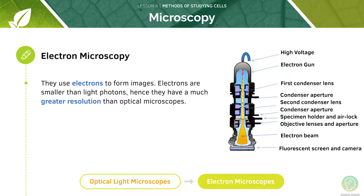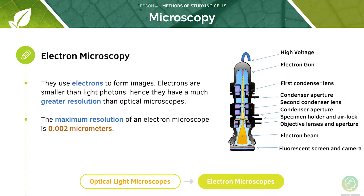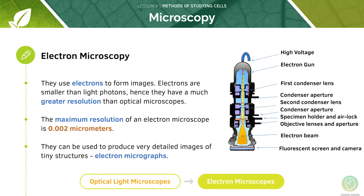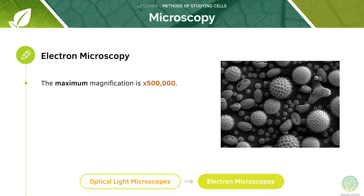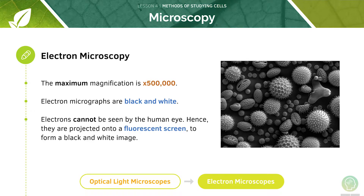Electron microscopes use electrons to form images. Because electrons are smaller than photons of light, electron microscopes have a much greater resolution than optical microscopes. The maximum resolution of an electron microscope is 0.002 micrometres. They can be used to produce very detailed images of tiny structures, known as electron micrographs, and the useful magnification can be very high — up to 500,000 times. Electrons cannot be seen by the human eye; hence they are projected onto a fluorescent screen to form a black and white image.